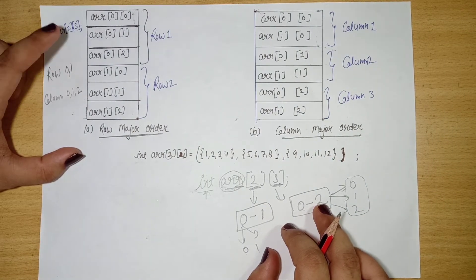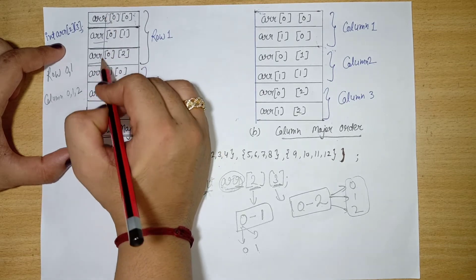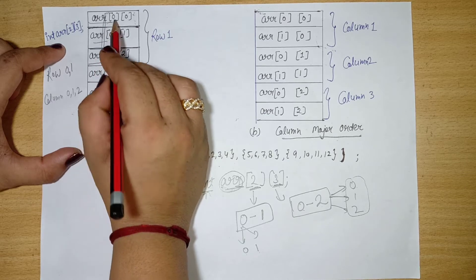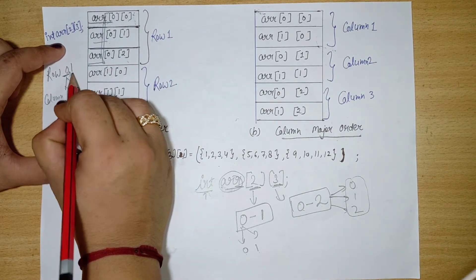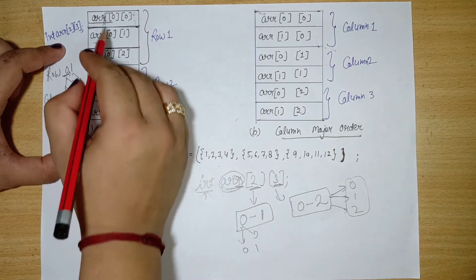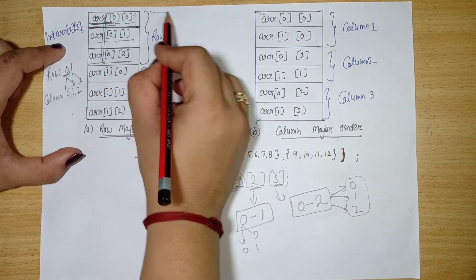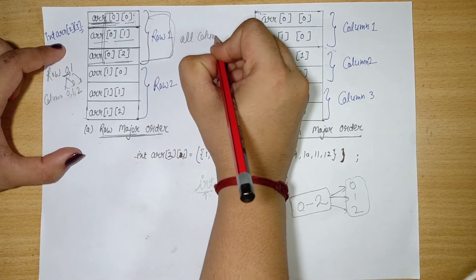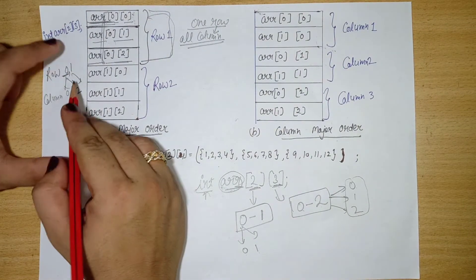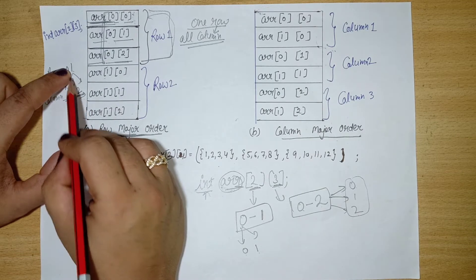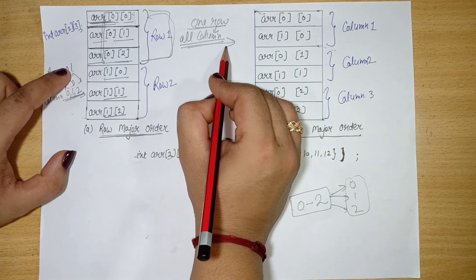In row major order, we take one row and write all its columns first, then move to the next row. For a 2×3 array, we first write: a[0][0], a[0][1], a[0][2] — all columns of row 0. Then we write: a[1][0], a[1][1], a[1][2] — all columns of row 1. In row major order, we take a row and write all the columns in that row before moving on.